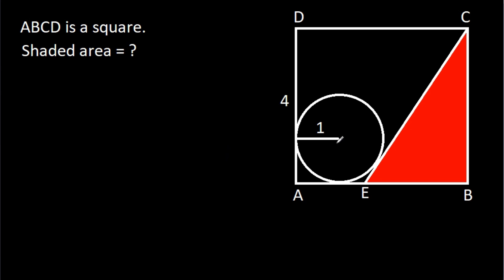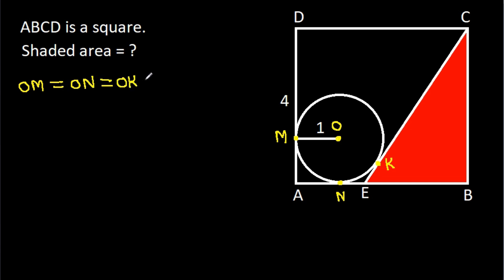Suppose the center of the circle is O, and suppose this point is M, this point is N, and this point is K. Then OM, ON, and OK are all equal to the radius, which is 1. So ON is 1 and OK is 1.